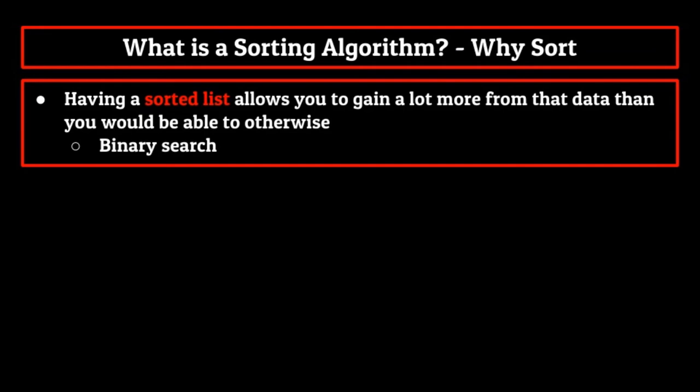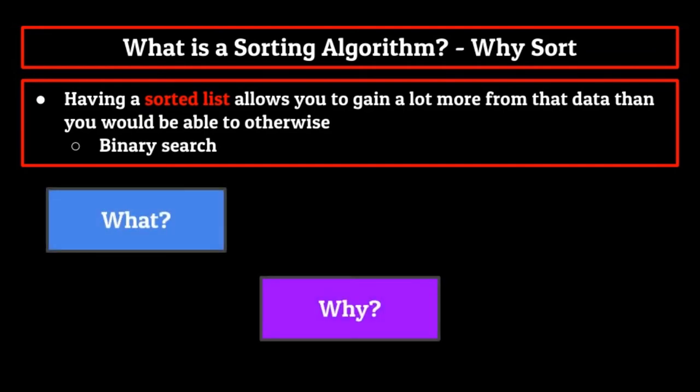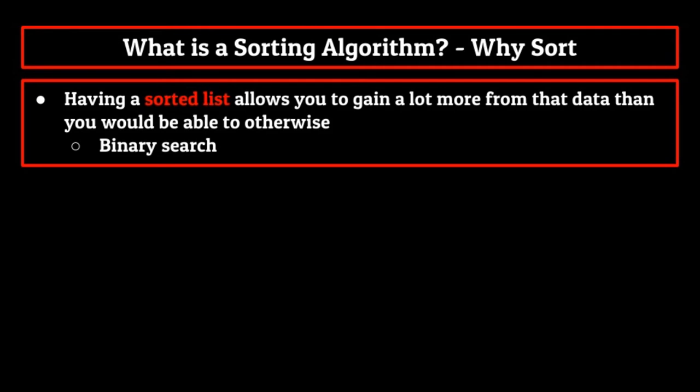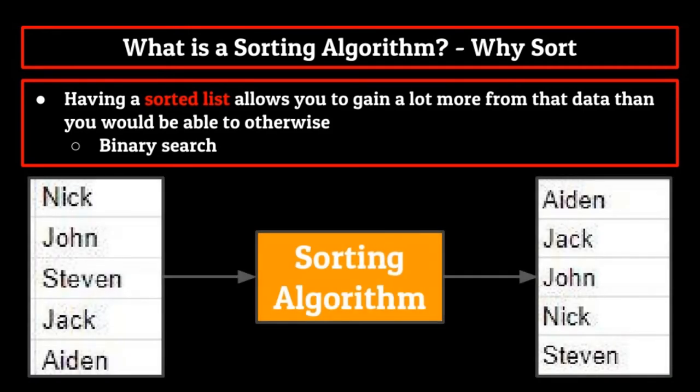Okay, so now that we know the what and why when it comes to sorting algorithms, we need to go over the how. Basically, up next, we'll be going over the different types of sorting algorithms and the examples that go with each of those types. You may be wondering how there are different types of sorting algorithms when the goal of each of them is the same, take an unsorted list and turn it into a sorted list. But depending on the type of data in that list, we can adjust the comparison operator to more efficiently sort the list.